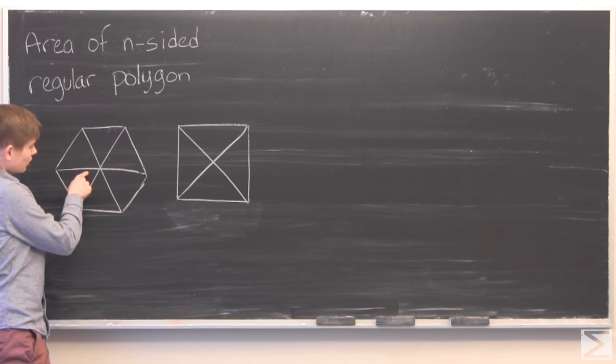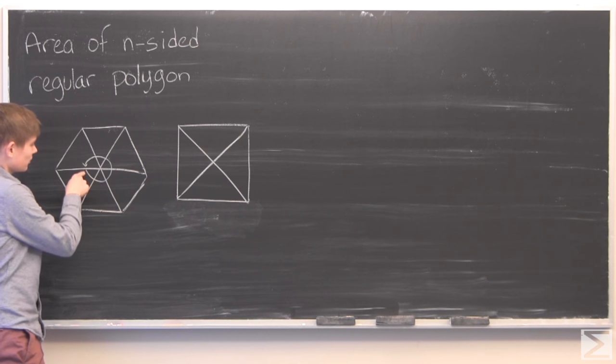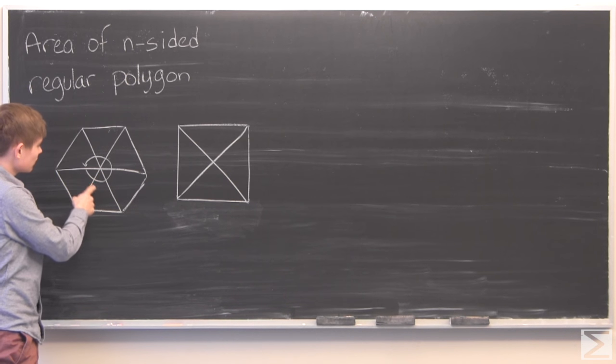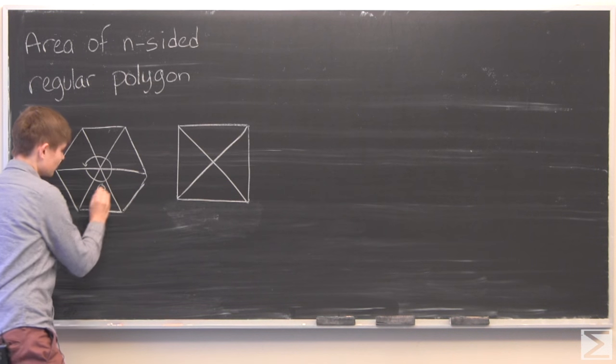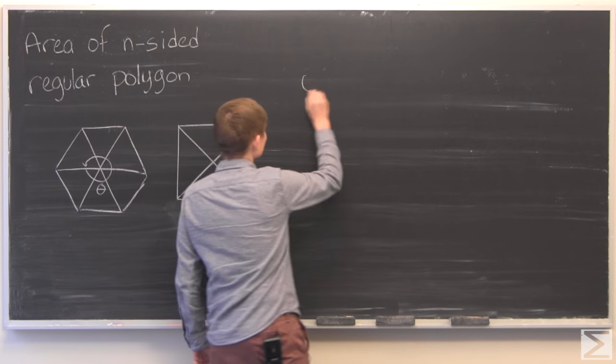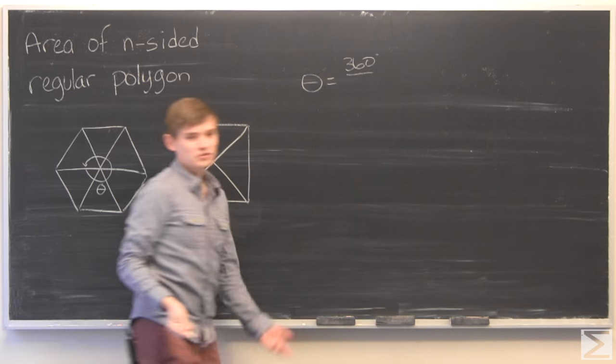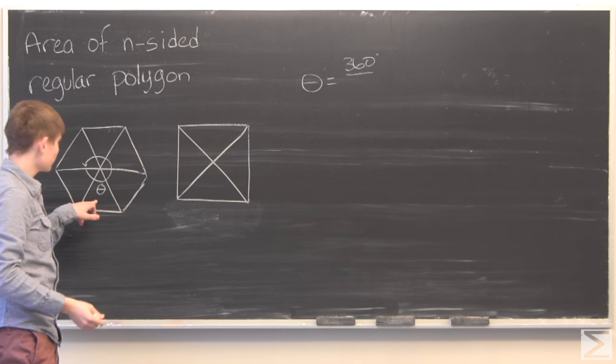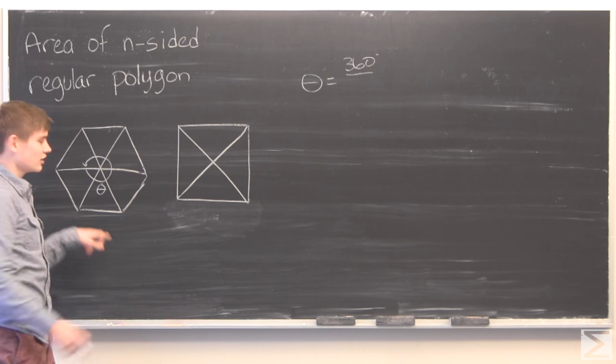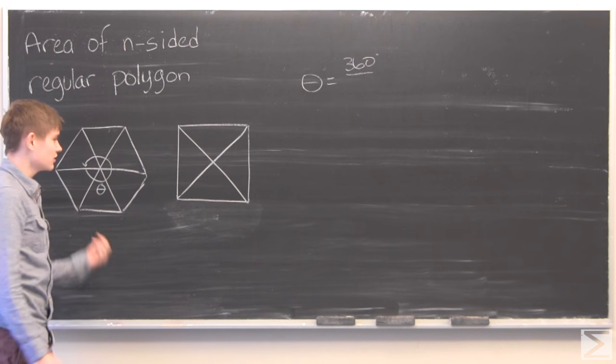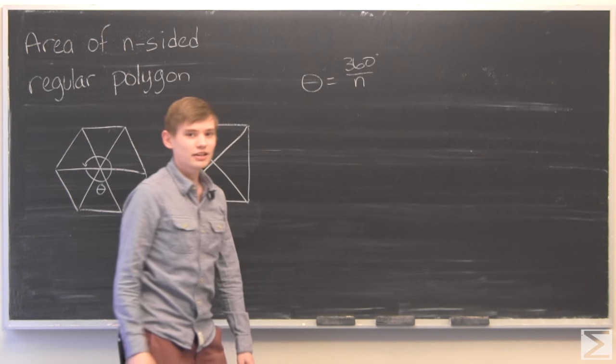You should know that if you go all the way around that's 360 degrees, which means that if we label this as theta, we can write that theta is equal to 360 degrees, we'll use degrees and not radians, divided by the number of triangles, which you hopefully can see that the number of triangles is number of sides of the polygon. So with an n-sided polygon, we'll just write n.